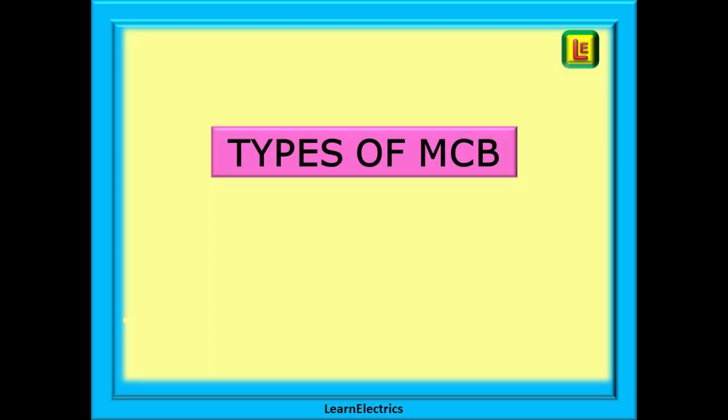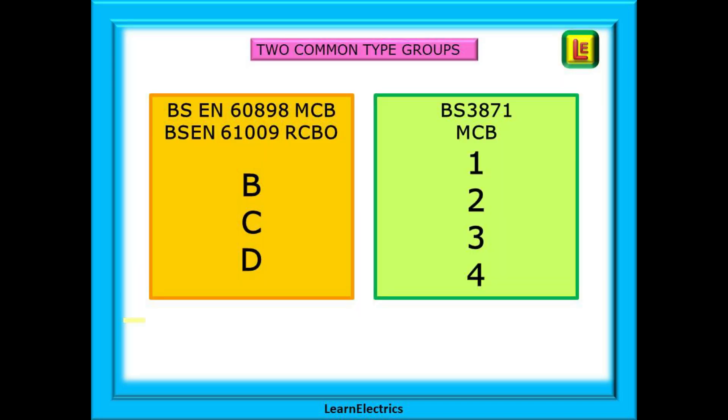Let's begin with a look at the different types of MCB. There are two type groups: the BS EN 60898 MCBs and BS EN 61009 RCBOs that use the designation types B, C and D for the most popular types. And then the older but still in use BS 3871 MCBs with the type numbers 1, 2, 3 and 4.